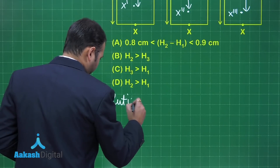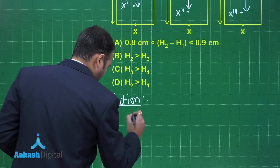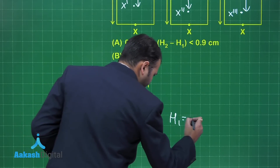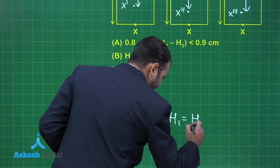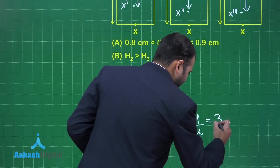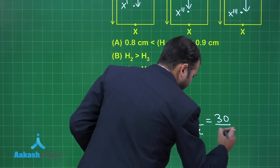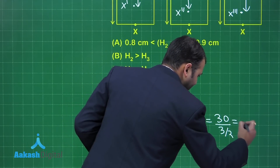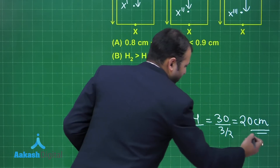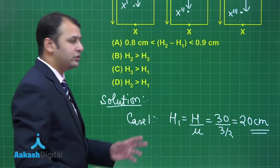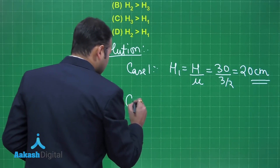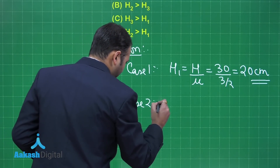Case 1: h1 is very straightforward — it equals real depth divided by refractive index, so it is 30 divided by 3/2, giving us 20 cm. So h1 = 20 cm.